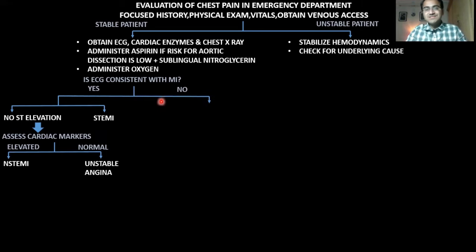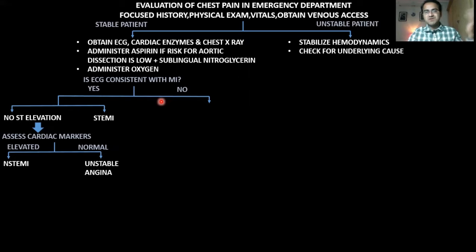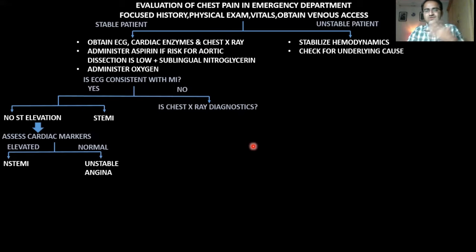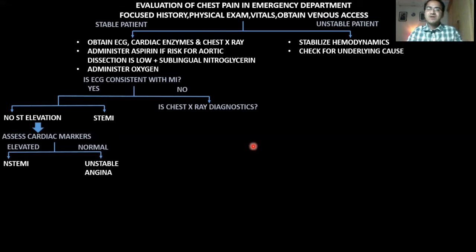If the ECG is normal, you need to think about whether this chest pain is due to a cardiac pathology or not. Maybe it is a pulmonary or GIT cause. The chest x-ray helps rule out pulmonary causes. If the chest x-ray shows findings such as pneumonia, pleural effusion, or aortic dissection — in which the mediastinum will be dilated — then a non-cardiac system may be causing the chest pain, and you need to investigate further.